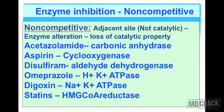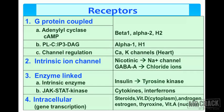Non-competitive enzyme inhibition: the drug does not act on the same site — it acts on an adjacent, non-catalytic site, leading to alteration in enzyme structure and loss of catalytic property. Examples: acetazolamide inhibits carbonic anhydrase, aspirin inhibits cyclooxygenase, disulfiram inhibits acetaldehyde dehydrogenase, omeprazole inhibits hydrogen-potassium ATPase, digoxin inhibits sodium-potassium ATPase, and statins inhibit HMG-CoA reductase.